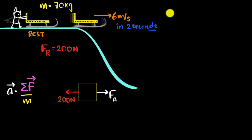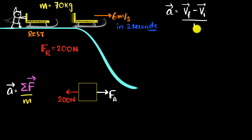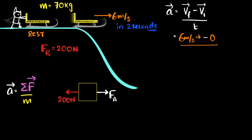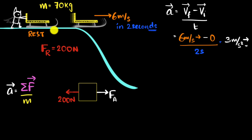Let me first calculate the acceleration. Acceleration equals final velocity minus initial velocity divided by time taken. The final velocity is 6 meters per second to the right, the initial velocity is zero since it's at rest, and the time is 2 seconds. That gives us 6 divided by 2, which is 3 meters per second squared to the right. The acceleration is to the right, which makes sense since we want the sledge to move to the right.